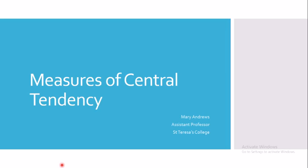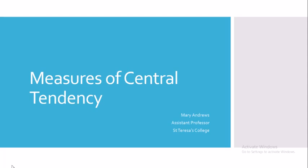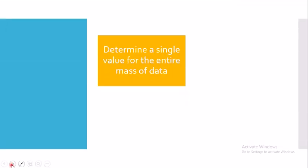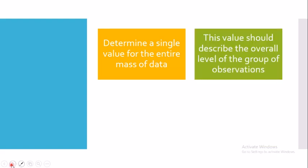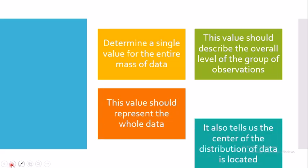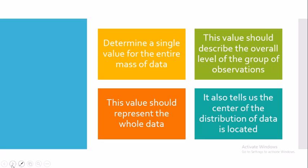Today we will be discussing the measures of central tendency, which are also called measures of central location. These measures are used to represent a set of data using a single value. This value should describe the overall characteristics of a group of observations and tells us the center of the distribution — hence the name measures of central tendency or central location.